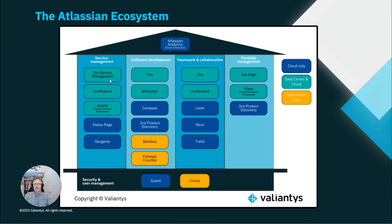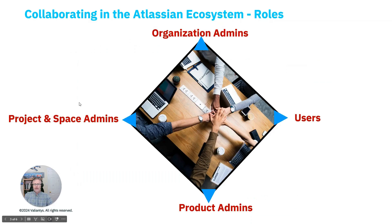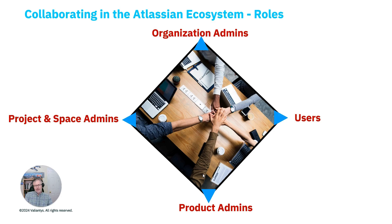Of course, both Jira and JSM are not only used in IT — they are used broadly throughout business teams in organizations. In other videos, we noted and emphasized that there are really three levels of admin roles in the Atlassian ecosystem. We have org admins, we have product admins — this could be a Jira or GSM admin, or a Confluence admin — and then we have project admins for Jira and Jira Service Management, and space admins for Confluence.